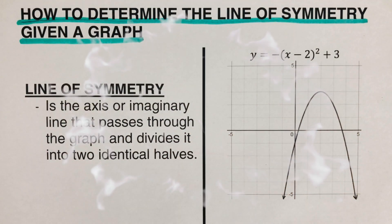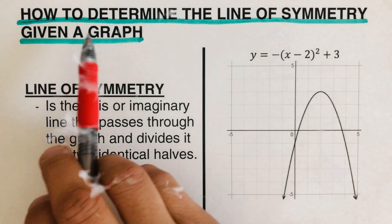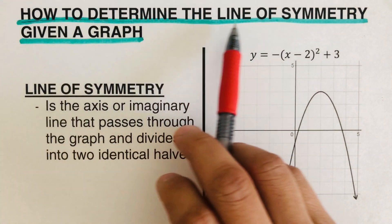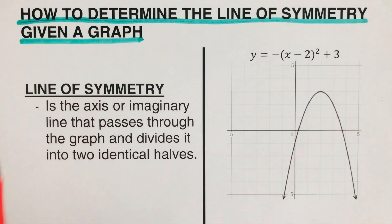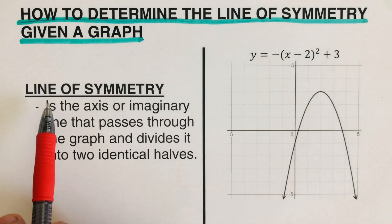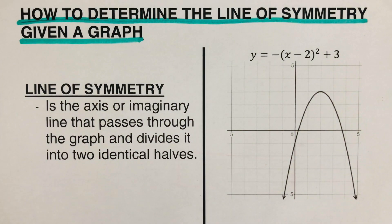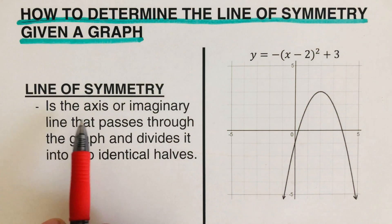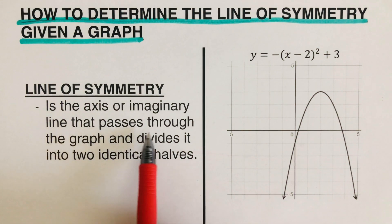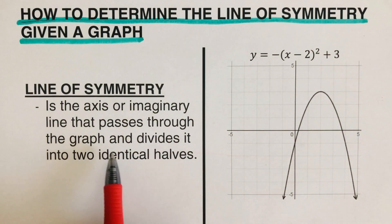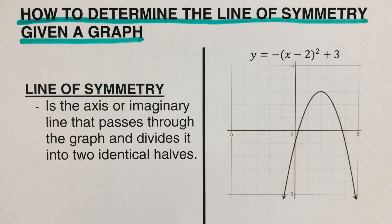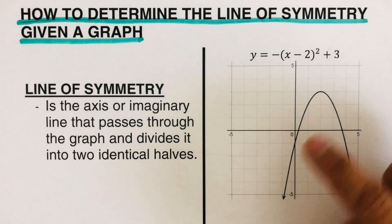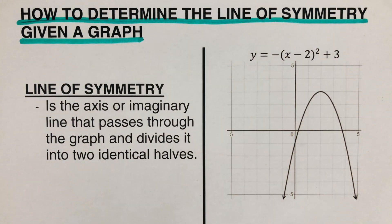Hello everyone. In this video we are going to determine the line of symmetry given a graph. The line of symmetry, otherwise called the axis of symmetry, is an imaginary line that passes through the graph and divides it into two identical halves.